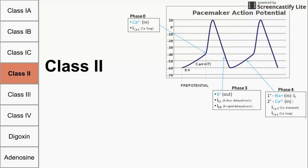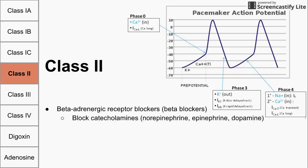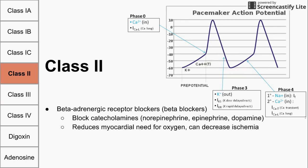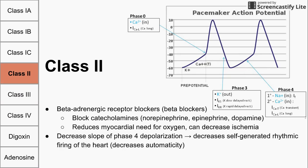Class 2 antiarrhythmic agents are essentially beta blockers — they block beta adrenergic receptors and therefore block the effects of catecholamines like epinephrine, norepinephrine, and dopamine. They reduce myocardial oxygen demand, which can decrease ischemia. They slow heart rate and contractility, and they decrease the slope of phase 4 depolarization, which reduces automaticity and can potentially resolve some arrhythmias.